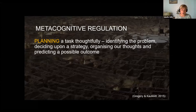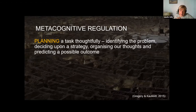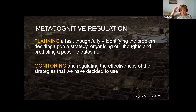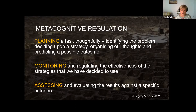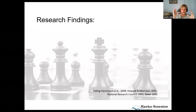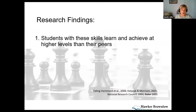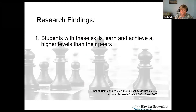Metacognitive regulation comes down to planning, deciding on a strategy, organizing our thoughts and predicting a possible outcome, but very much then around monitoring — are those strategies working? Are they getting in the way? Do we have misconceptions about a concept impacting our learning? And then of course assessing and evaluating the results — did I meet the criteria? If our students are operating at that level of metacognition, the research shows they will learn and achieve at much higher levels than their peers.